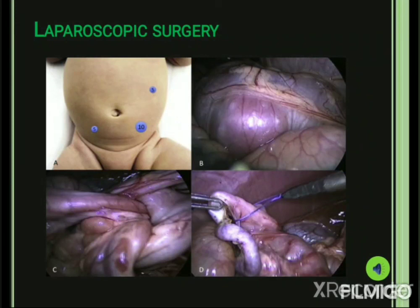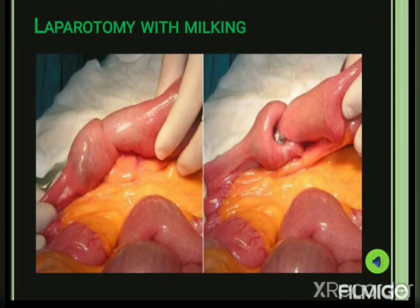This picture shows laparoscopic surgery where a few incisions are made over the abdominal wall and with the help of a laparoscope the telescoped intestine is pulled out and reduced to its normal position. Another picture shows the laparotomy surgery with milking of the intestine — the abdominal walls are opened, and the telescoped part of the intestines is milked out, like milking a cow, and reduced to its normal position.